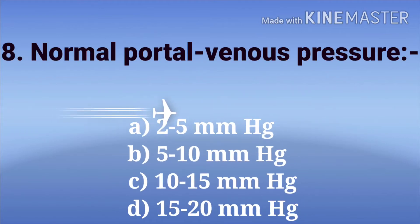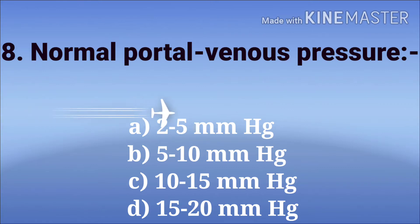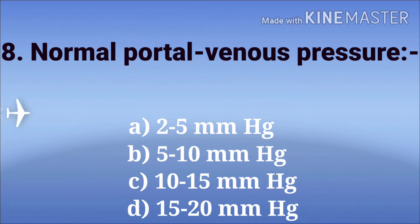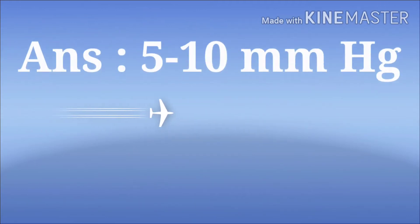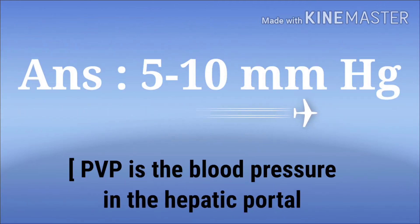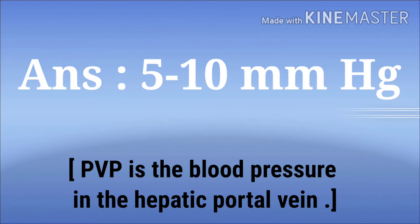Normal portal venous pressure. The options are 2–5 mm of Hg, 5–10 mm of Hg, 10–15 mm of Hg, and 15–20 mm of Hg. The answer is 5–10 mm of Hg. The portal venous pressure is the blood pressure in the hepatic portal vein.